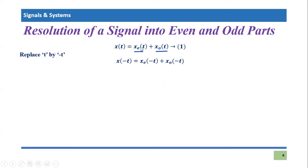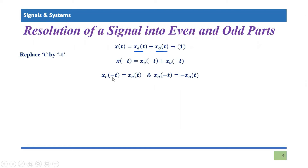there is a mathematical relationship we have already discussed in previous video tutorials. For odd signals, there is also a mathematical criterion. So both those criteria for even and odd are applicable for the even and odd parts. What are those criteria?